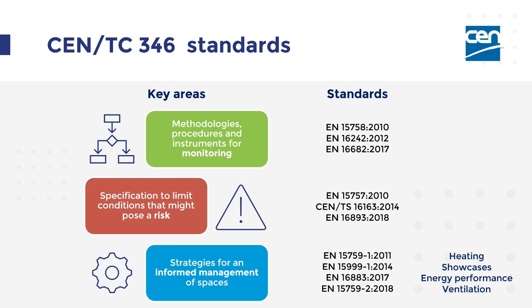The last key area covers strategies for the informed management of spaces. The standard EN 15759 Part 1, published in 2011, contains guidelines for heating churches, chapels, and other places of worship. Part 2 of 2011 is about ventilation management for the protection of cultural heritage buildings and collections. Part 3 of 2014 contains guidelines for the design of showcases for exhibition and preservation of objects, general requirements. The standard EN 16883 of 2017 contains guidelines for improving the energy performance of historical buildings.